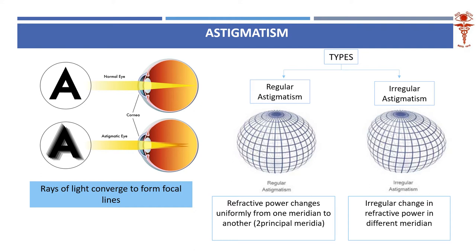The corneal surface is not a smooth surface. It has a vertical curvature and a horizontal curvature. Because light strikes these two curvatures, it creates a mismatch of images — two images, or one image in front and one image behind, one image on the retina and one image in front. It can create varied combinations and permutations. This is called astigmatism.